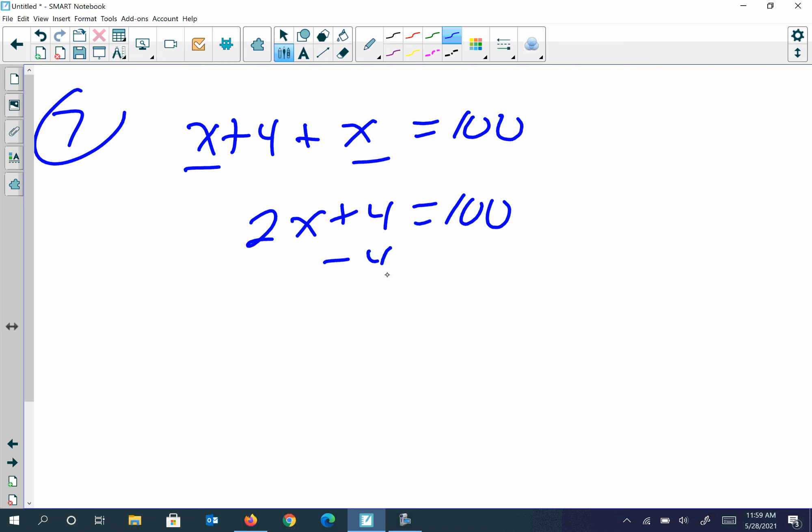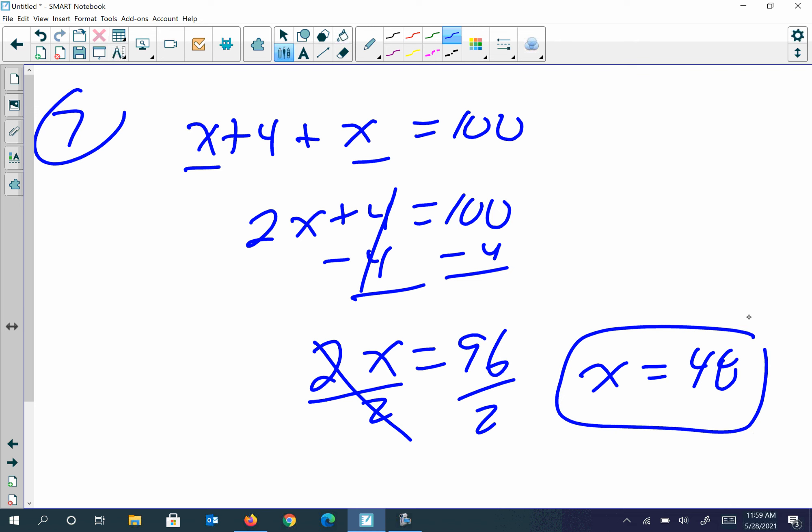That's equal to 100. Subtract 4 from both sides, so 2x equals 96. Divide each side by 2, so x is equal to 48. So one team scored 48, the other team scored 4 more than that, so the other team scored 52 points. 52 plus 48 is 100. That's it.